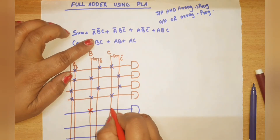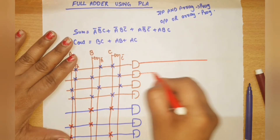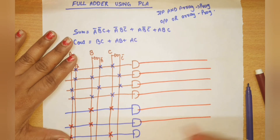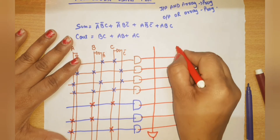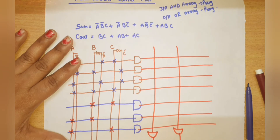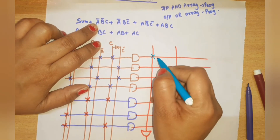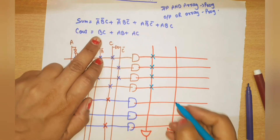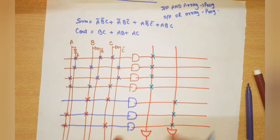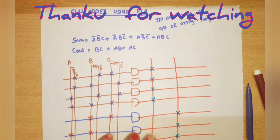First AND gate for Carry Out: inputs B and C. Second AND gate: inputs A and B. Last AND gate: inputs A and C. In total, there are seven product term wires because there are seven product terms overall. The outputs are two: one OR gate for Sum and one for Carry Out. Connections: A-bar·B-bar·C, A-bar·B·C-bar, A·B-bar·C-bar, A·B·C for sum; B·C, A·B, A·C for carry out. This is the logic diagram of the full adder using PLA. Thank you.